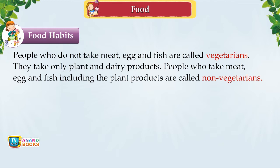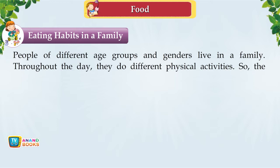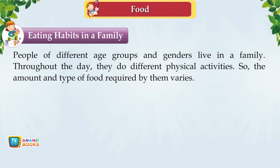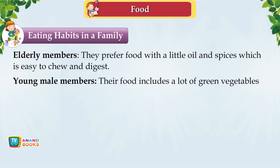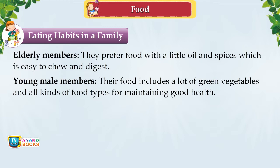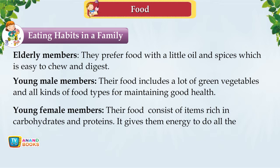Eating Habits in a Family. People of different age groups and genders live in a family, and throughout the day they do different physical activities, so the amount and type of food required by them varies. Elderly members prefer food with little oil and spices that is easy to chew and digest. Young male members include lots of green vegetables and all food types. Young female members eat items rich in carbohydrates and proteins. They cook food, serve all members, and eat last.